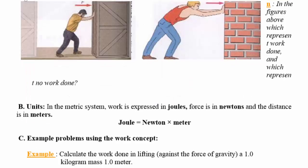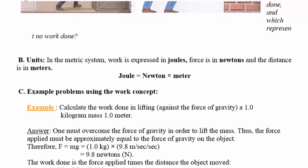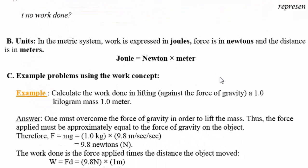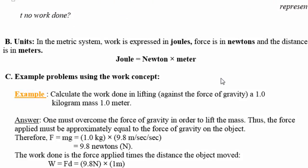So what is the unit of work? Since work is force times distance, it will have the unit of force times the unit of distance. Since the unit of force is Newton and the unit of distance is meter, the unit of work is Newton times meter, and we call it a joule. So a joule is basically a Newton force that was able to move an object one meter.